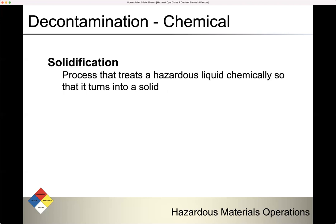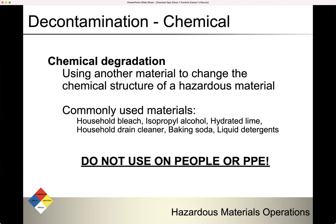Now moving on to chemical decontamination. Solidification is a process that treats a hazardous liquid chemically so that it turns into a solid — hardware stores often sell a chemical that does this for paint, allowing safe disposal of leftover unused paint. There's also chemical degradation, using another material to change the chemical structure of a hazardous material. Commonly used materials include household bleach, isopropyl alcohol, hydrated lime, household drain cleaner, baking soda, and liquid detergents.